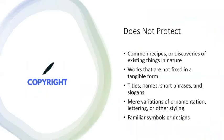At this point, you may be thinking that copyrights can basically protect anything. That's not correct because there are several types of works that are commonly mistaken as being protectable when in fact they are not. Some common examples include, but are not limited to, common recipes or discoveries of existing things in nature — think of an ingredient list and basic preparation instructions. Works that are not fixed in a tangible form — think of ideas and concepts as not being protectable.